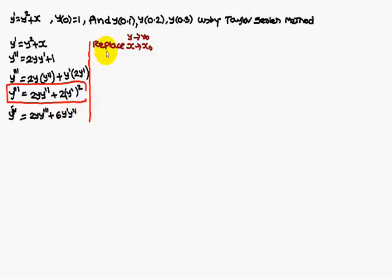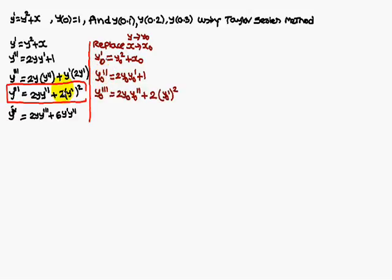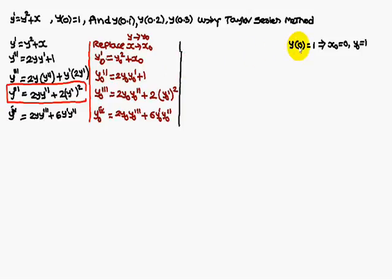Next, replace x with x naught and y with y naught in the expressions. In the second differentiation also, replace x with x naught and y with y naught. So y naught dash equals y naught squared plus x naught. In the second differentiation, also replace x with x naught and y with y naught.